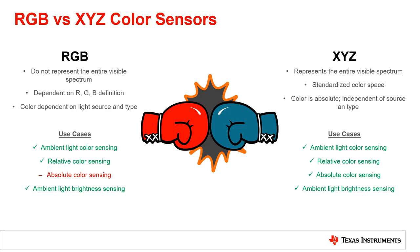In summary, both RGB color sensors like TI's OPT4060 and XYZ color sensors like TI's OPT4048 can sense different colors and distinguish the differences between them. RGB color sensors do not represent the entire visible spectrum and are dependent on light source and type, unlike XYZ color sensors. For most applications, either sensor type can be used. However, in some applications, there are advantages and disadvantages to each type. While usually more cost effective, RGB color sensors require additional calibration and transformations while being less accurate when compared to an XYZ color sensor.